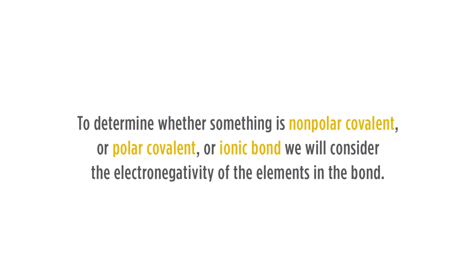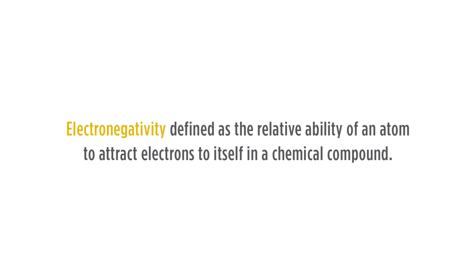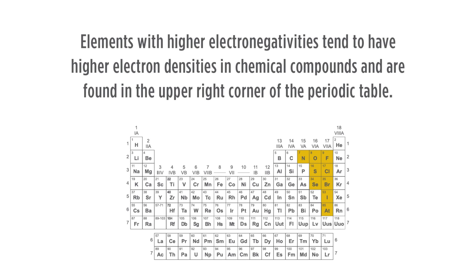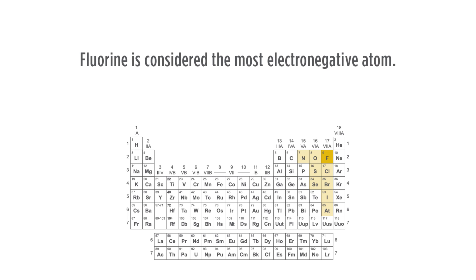To determine whether something is non-polar covalent, polar covalent, or ionic bonding, we will consider the electronegativity of the atoms in the bond. Electronegativity is defined as the relative ability of an atom to attract electrons to itself in a chemical compound. Elements with high electronegativities tend to have higher electron densities in chemical compounds and are found in the upper right corner of the periodic table. Fluorine is considered the most electronegative atom.